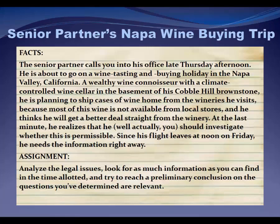Alright, so here's our first legal research problem. You're working at some big law firm in Manhattan, and late Thursday afternoon you get a call from your senior partner telling you that he's about to go on a wine tasting and buying holiday in Napa. He's a connoisseur, and by the end of his trip he wants to have filled up his expensive climate-controlled wine cellar. He decides he wants to buy wine in Napa and ship it home to his brownstone in Brooklyn. It suddenly occurs to him at the last minute that he wants to ship them home, but he's not sure it's legal — are private individuals even allowed to ship wine across state lines? He vaguely remembers something about some case or statute that said he either could or could not ship the wine, so he tells you to take a look at the issue and give him some legal guidance before he leaves.